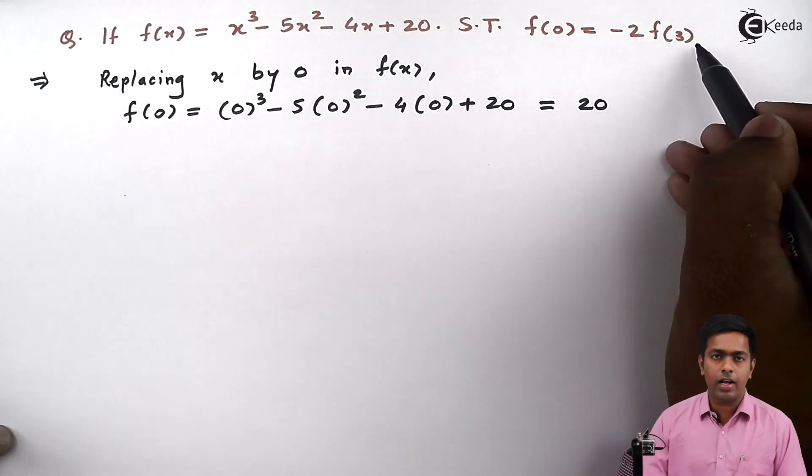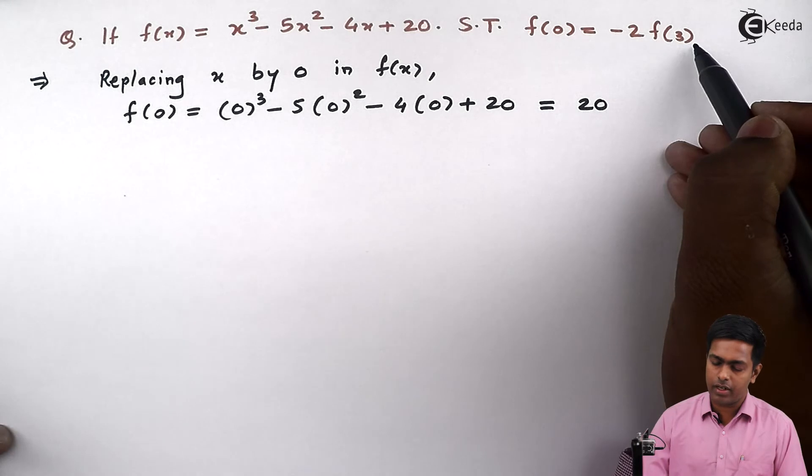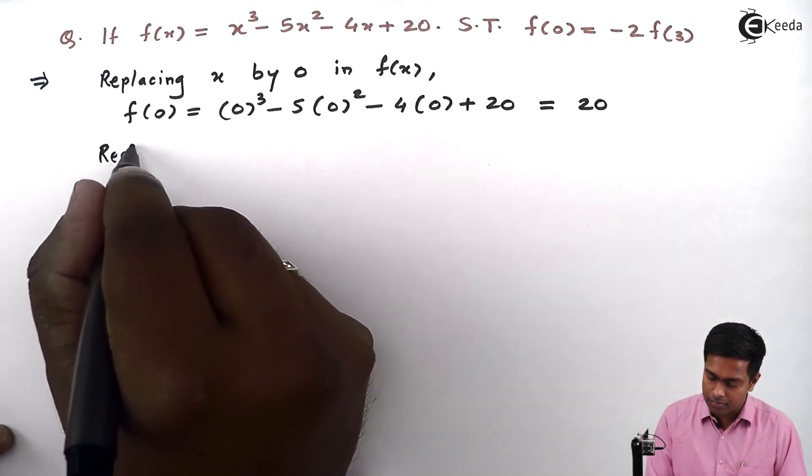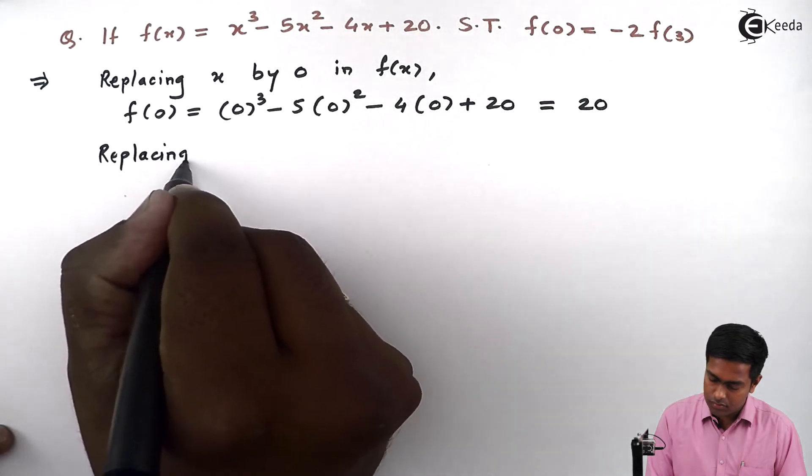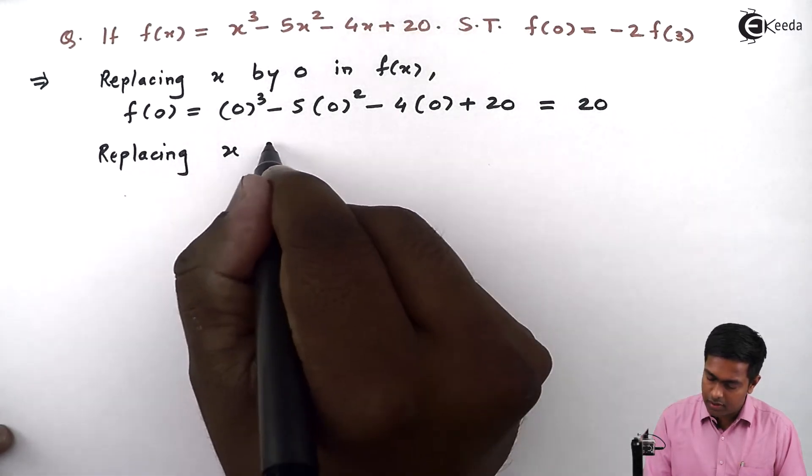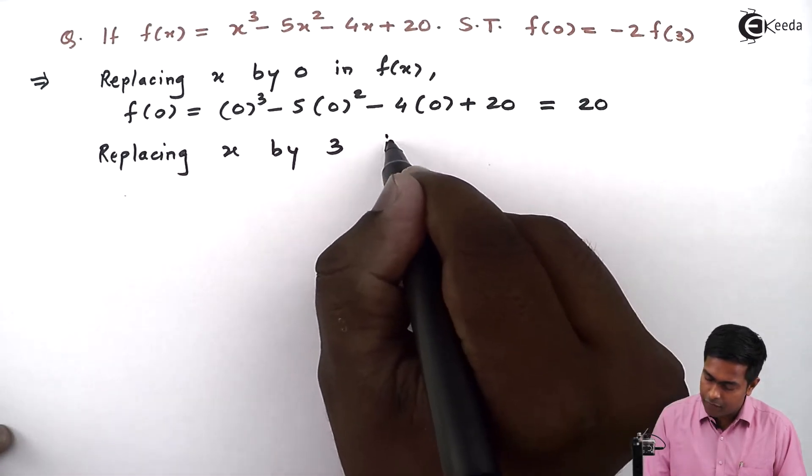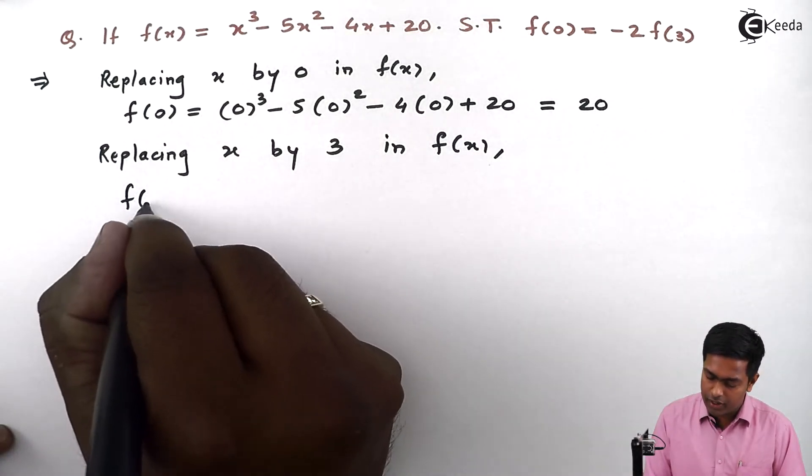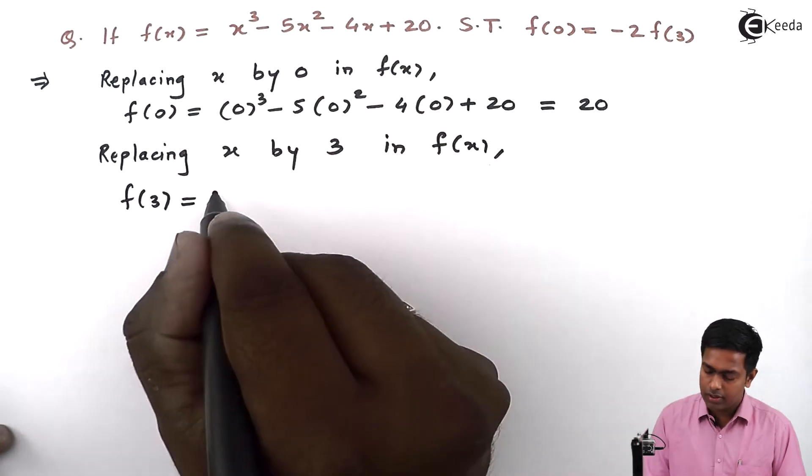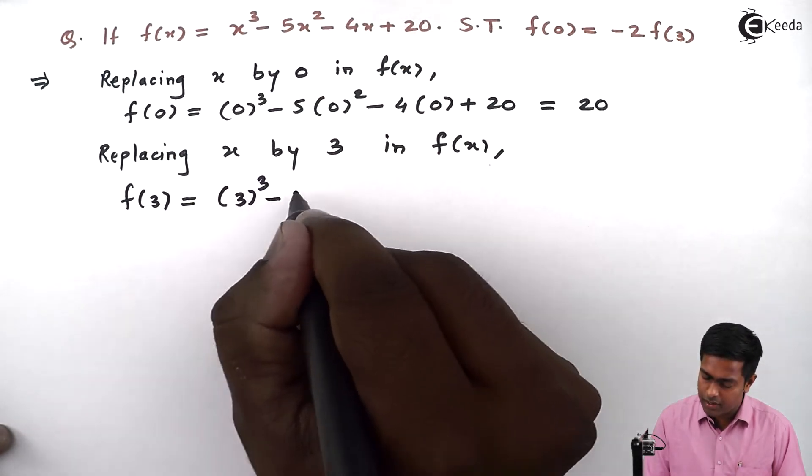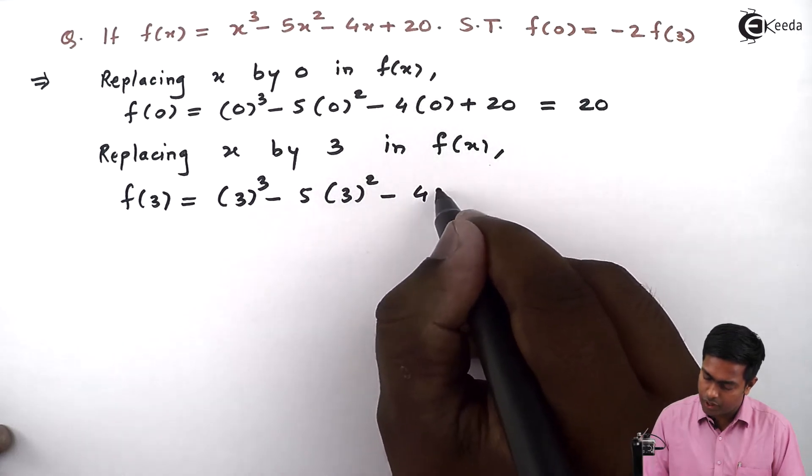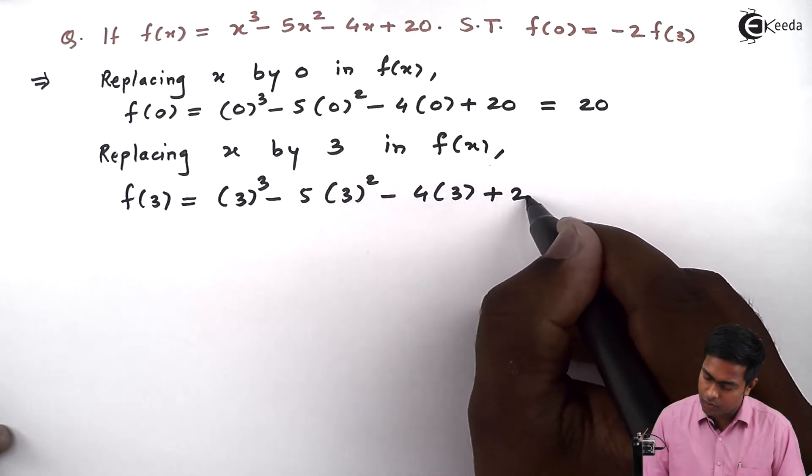Next we'll find out value of f(3). So to get f(3) now I'll replace x by 3. So replacing x by 3 in f(x) will get f(3) = 3³ - 5(3)² - 4(3) + 20.